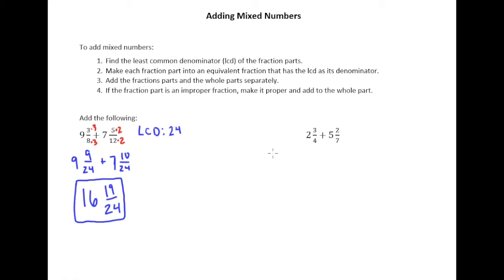Now moving over to this example, we need to find the LCD here as well. So our least common denominator, notice that 4 and 7 have nothing in common, no common factor. So when that happens you just multiply them, 4 times 7 is 28.